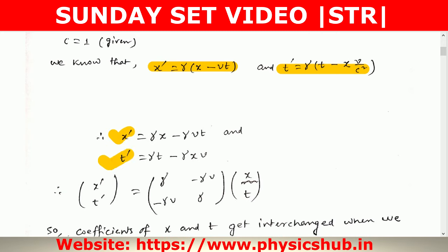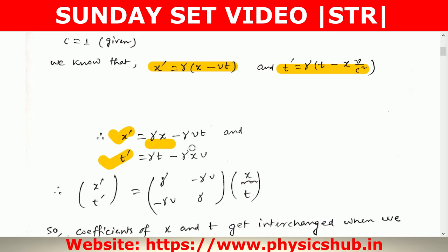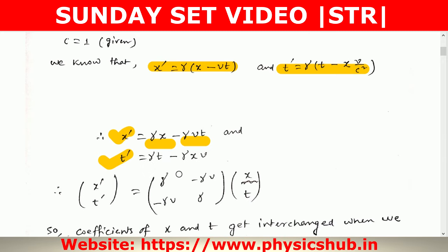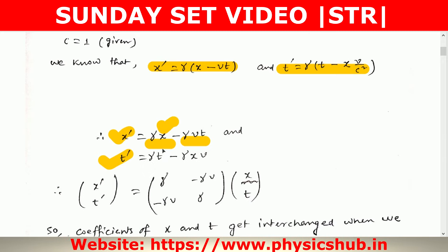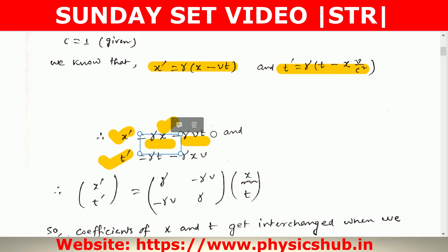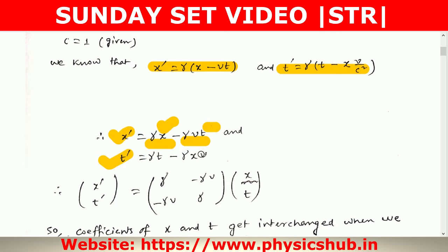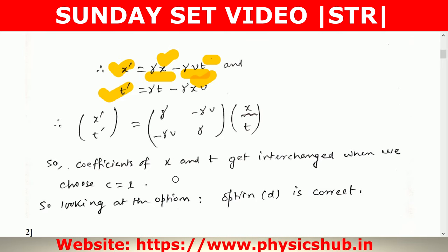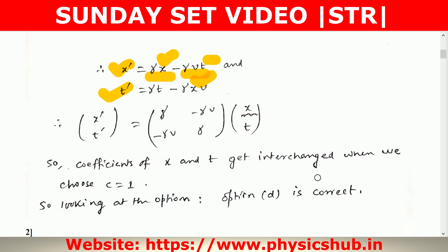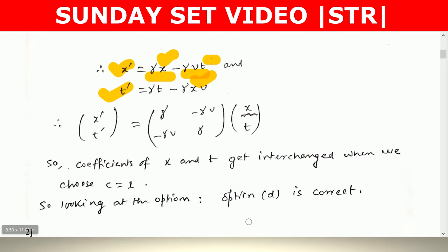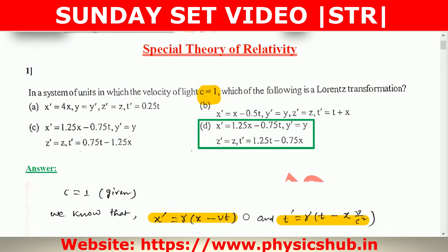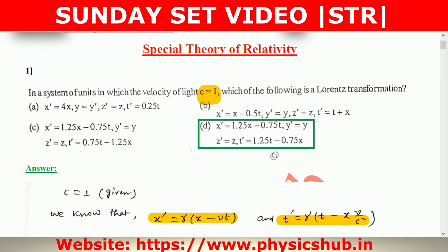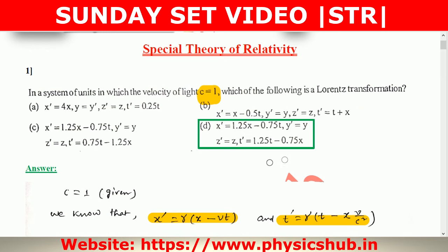In the expressions for x′ and t′, the coefficients of x and t are getting interchanged — where x was, t appears, and where t was, x appears. So the coefficients of x and t get interchanged when we choose c = 1. Looking at the options, only in option D do we see that the coefficients of x and t have been interchanged. So option D is the correct answer.